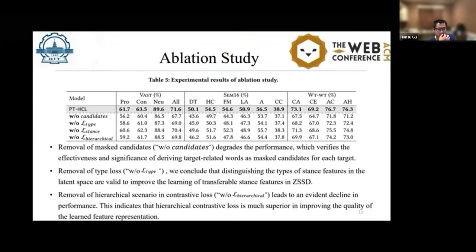We can see that removal of mask candidates degrades the performance, which verifies the effectiveness of deriving target-related words as mask candidates for each target. The removal of type nodes shows that distinguishing the types of stance features in the latent space is valid to improve the learning of transferable stance features in zero-shot stance detection. The removal of hierarchical contrastive nodes leads to an evident decline in performance, indicating that hierarchical contrastive learning is much superior in improving the quality of learned feature representations.